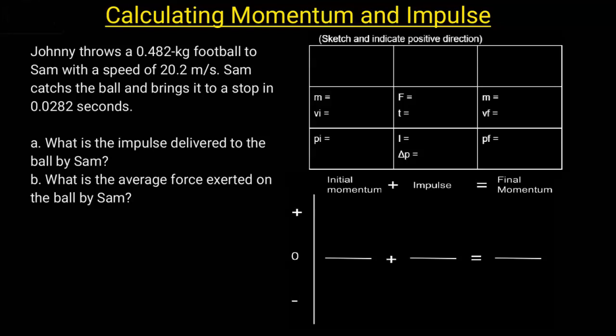In this video, I will show you how to calculate momentum and impulse problems. To get started, we're going to need to know some basic equations. The first is that momentum is equal to the mass times velocity. If you multiply these two numbers, you'll get the momentum.